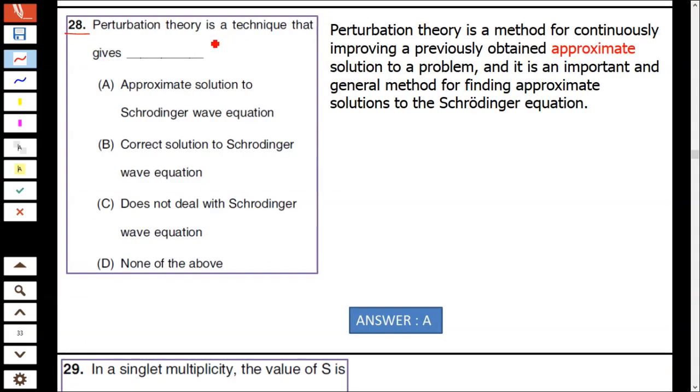Question number 28: Perturbation theory is a technique that gives approximate solution to Schrödinger wave equation. Options about correct solution, not dealing with the equation, or none of them—these are not correct. Perturbation theory gives an approximate solution to the Schrödinger wave equation. It is a method of continuously improving previously obtained approximate solutions and is an important and general method for finding approximate solutions.